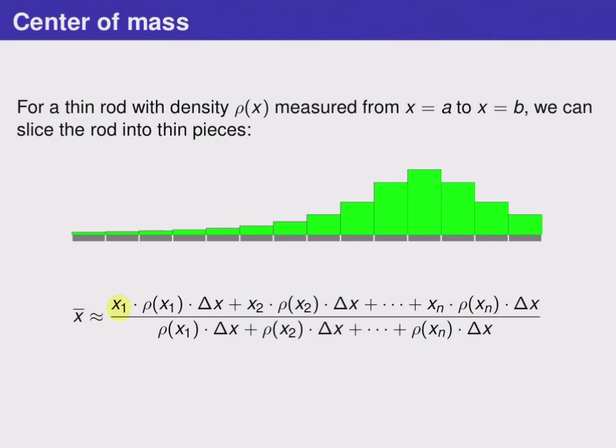This x1 represents the location of this first slice. The rho of x1 represents how dense that particular part of the object is, so the value of the green box's height.